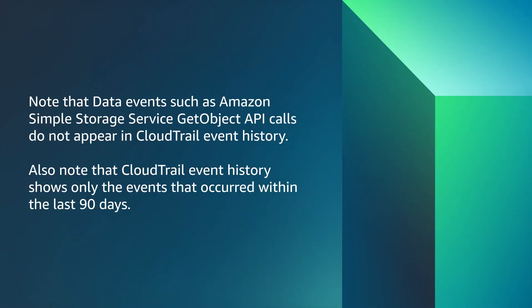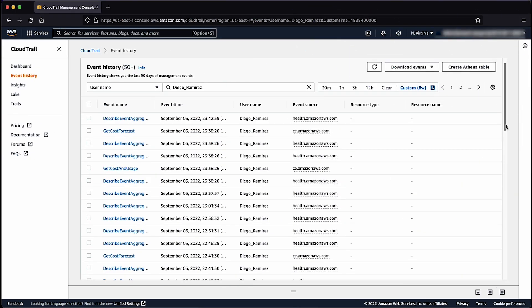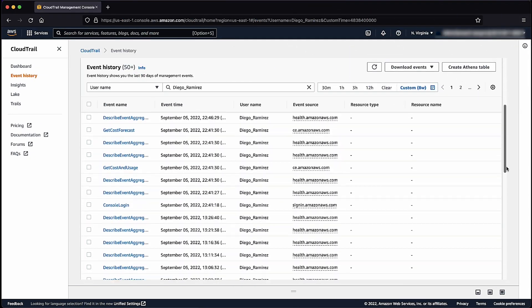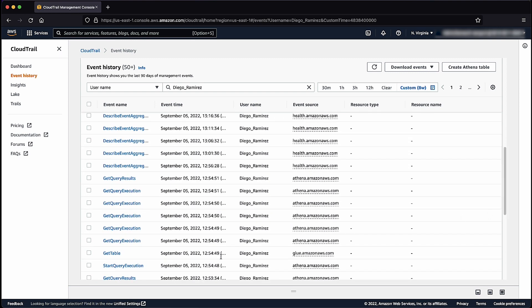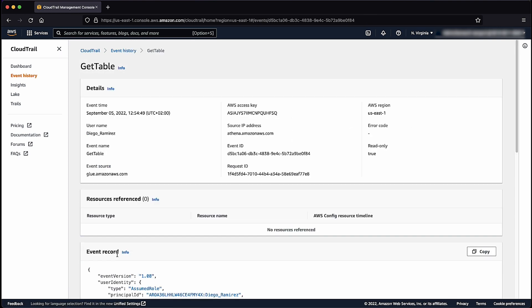Note that data events such as Amazon Simple Storage Service Get Object API calls do not appear in the CloudTrail event history. Also note that CloudTrail event history shows only events that occurred within the last 90 days. You can get detailed information about each event log by selecting an event and then viewing event records.